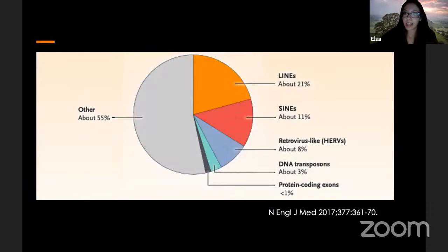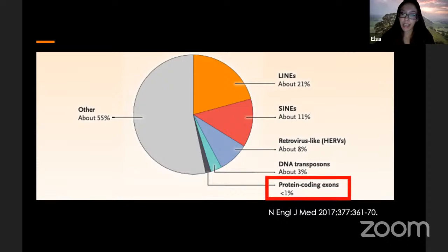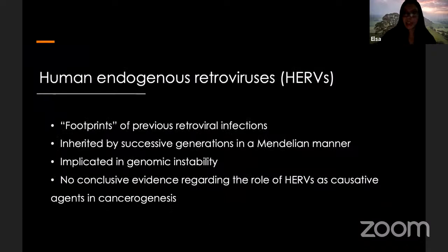Let's take a closer look at human endogenous retroviruses, or HERVs. These are footprints of previous retroviral infections which are inherited by successive generations in a Mendelian manner. Their activity has also been implicated in the induction of genomic instability, although currently there is no conclusive evidence on whether HERVs are causative or promoting agents in carcinogenesis.